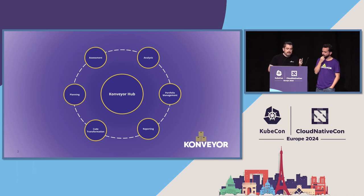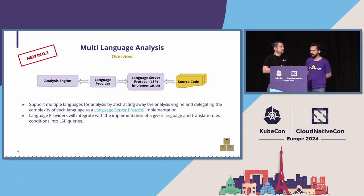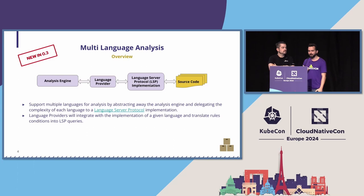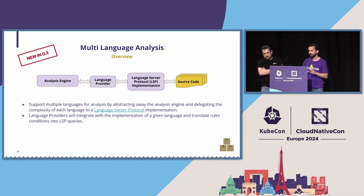The most exciting one is the analysis module. In our latest Conveyor release, 0.3, we included a new analysis engine. Is everyone here aware of the language server protocol and language servers? We basically leverage the power of the language server protocol that Microsoft developed for VS Code to handle different languages, and use that to abstract our analysis engine away from the complexities and peculiarities of each language.